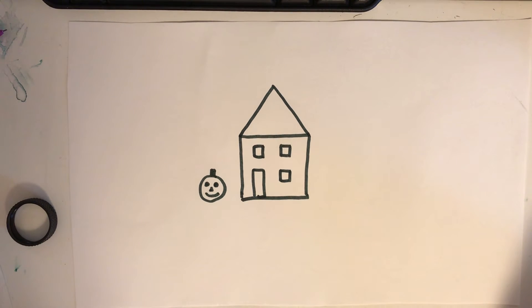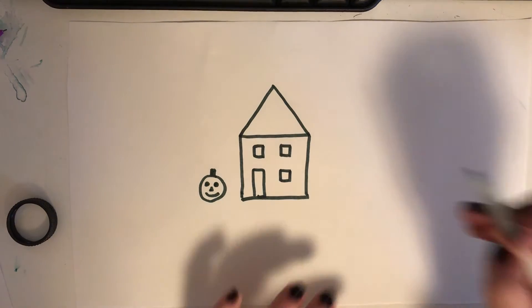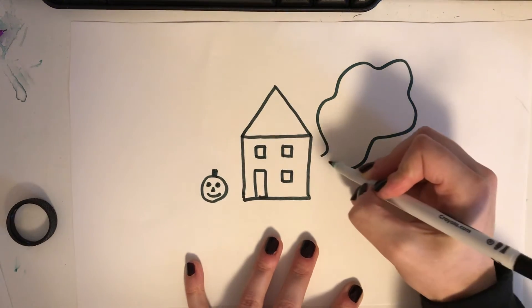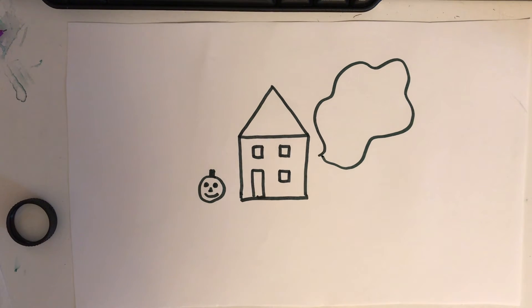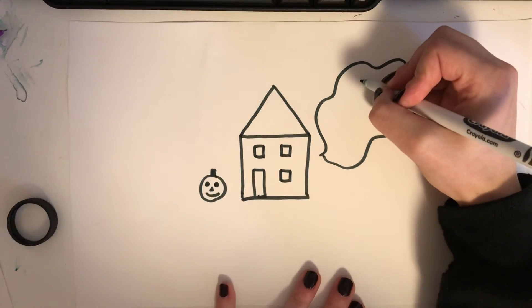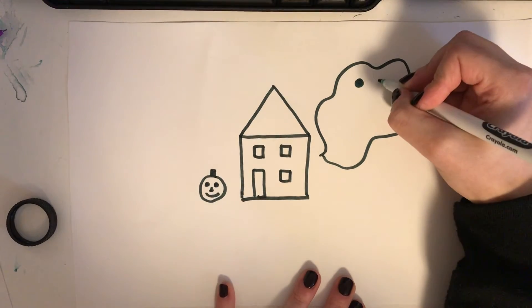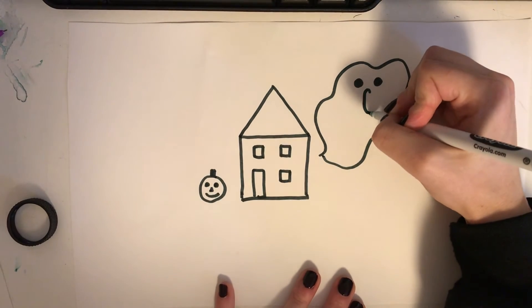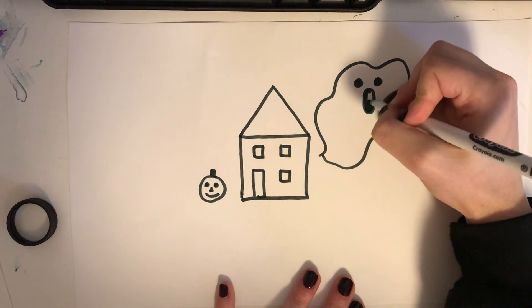Then we're going to make a freeform shape. I want you to make a crazy looking shape. Oh boy, that's a crazy looking shape, isn't it? We're going to make it into something scary by giving it two round eyeballs and one big oval egg-shaped mouth.